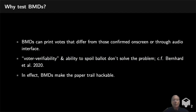Why do we need to test ballot marking devices? Well, they can print votes that differ from what voters saw on the screen or heard through the audio interface. The idea of voter verifiability is not really refined enough to capture the security properties we need in a voting system. In particular, the ability to catch an error, spoil the ballot, and request another opportunity to vote isn't enough to make ballot marking devices safe voting technology.